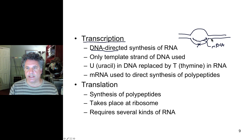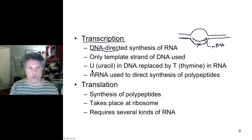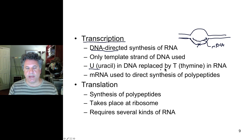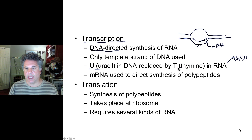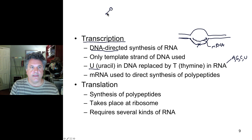Only one of the two strands — the template strand of DNA — is transcribed into messenger RNA. There are differences between DNA and RNA. One difference is that the nitrogenous bases found in RNA nucleotides are adenine, guanine, cytosine, and uracil — not thymine as in DNA.